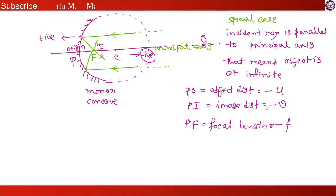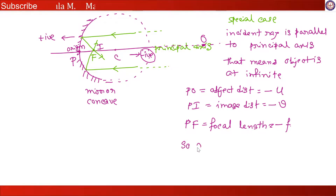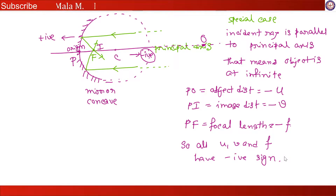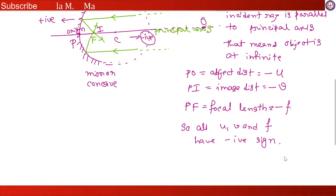So here all u, v and f have a minus sign. This is how the sign is defined in the case of a concave mirror.